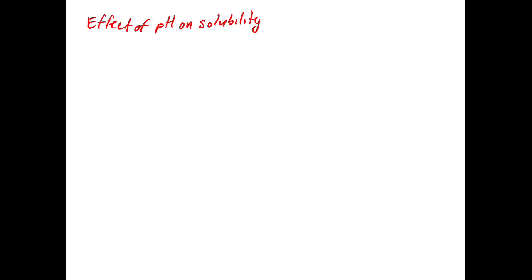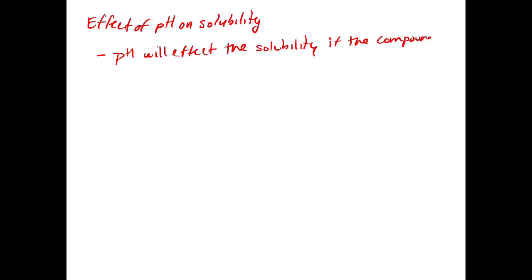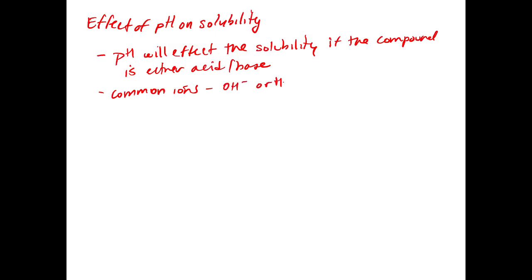In this video, we're going to look at what happens to the solubility of a compound when we change the pH. pH will affect the solubility if the compound you're trying to dissolve is either an acid or a base — meaning it's going to react with the water. The pH of the solution will affect solubility because you have competing effects: not only solubility, but also common ions in solution, which are either OH⁻ or H₃O⁺, and these vary in concentration with pH.